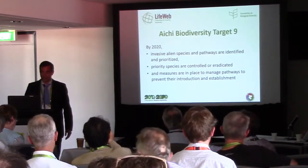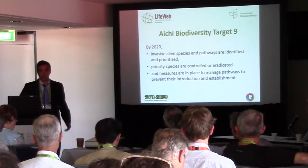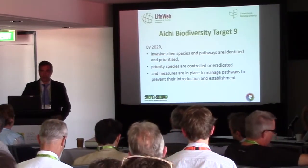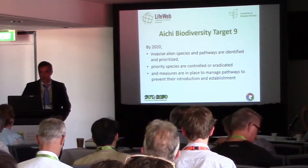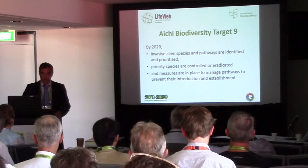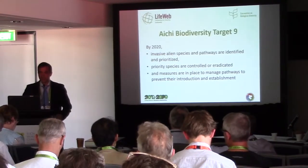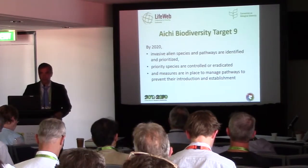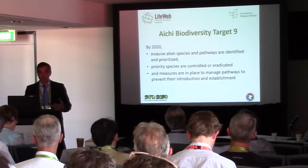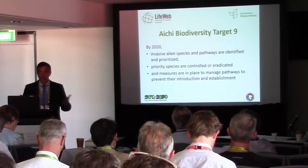You know about Aichi Biodiversity Target 9. Target 11, which is the one we're all here to talk about on protected areas — if you achieve Target 11, you end up achieving much of most of the rest of the Aichi targets. But there are two other ones that are very important for invasive alien species: Target 14, on ecosystem services and keeping the flow of ecosystem services, and Target 15, which is about ecosystem resilience and ecosystem restoration. So invasive alien species management is a key way that we achieve all of those, which help us achieve Aichi Target 11.